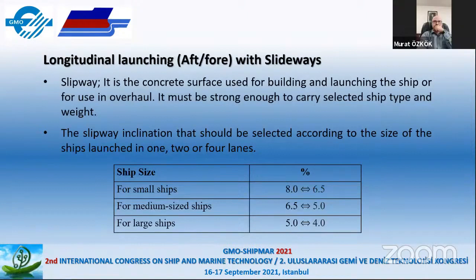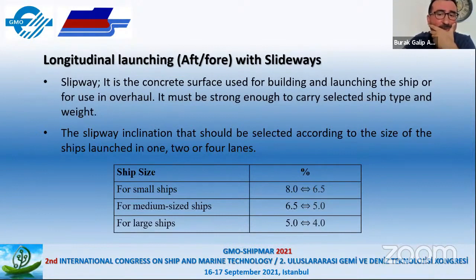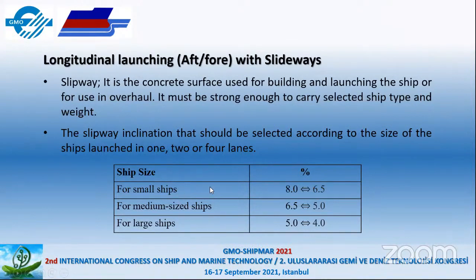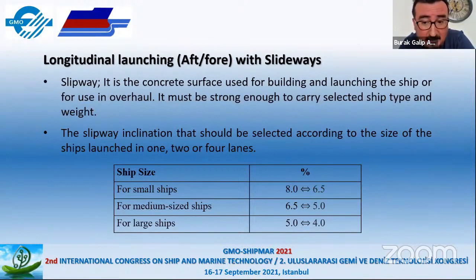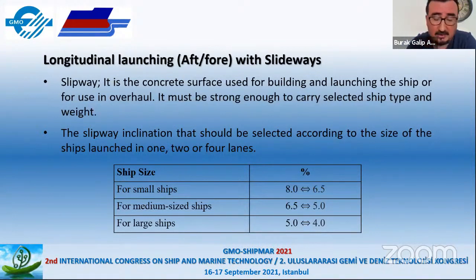Here is some explanation about the inclination ratio of slipways. For small ships, the inclination is approximately 6.5 to 8 percent. For medium-size ships it is 4 to 6.5 percent. And for large ships, the inclination is 4 to 5 percent — these are the percentages used when building the slipway.